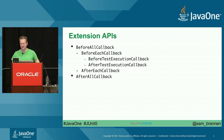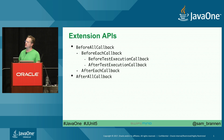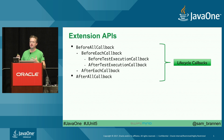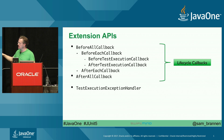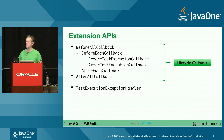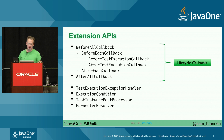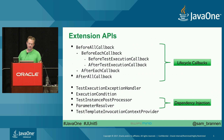Extension APIs include BeforeAll and BeforeEach — befores and afters for various levels. BeforeAll is class-level, like BeforeClass. BeforeEach is like Before in JUnit 4. BeforeTestExecution is immediately before the test method executes. These are lifecycle callbacks. Beyond that, there's a TestExecutionExceptionHandler, ExecutionCondition, TestInstancePostProcessor, ParameterResolver — which supports dependency injection — and a TestTemplateInvocationContextProvider for repeated tests, parameterized tests, and test matrices.